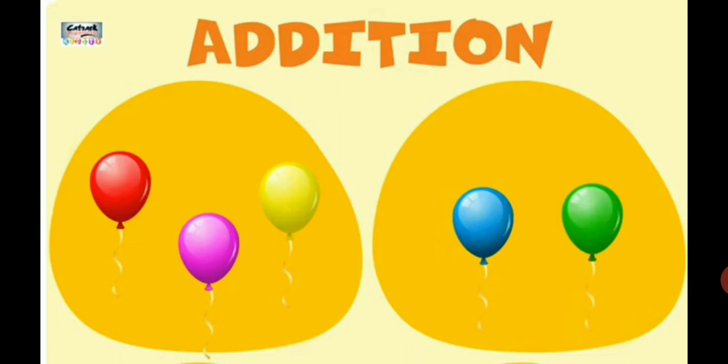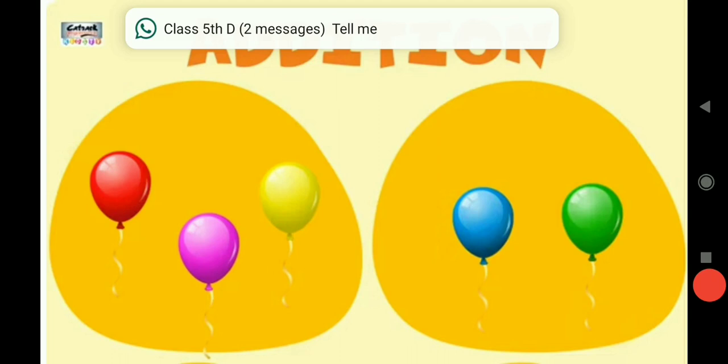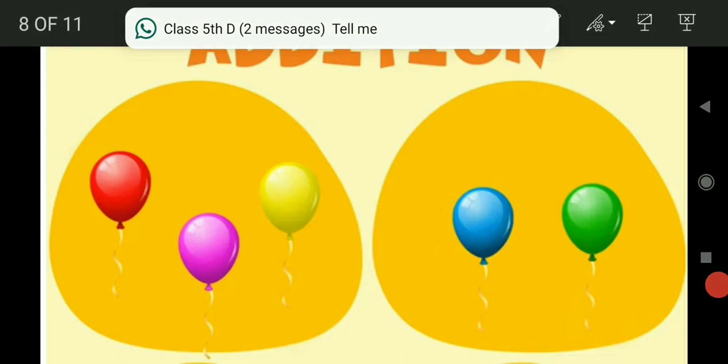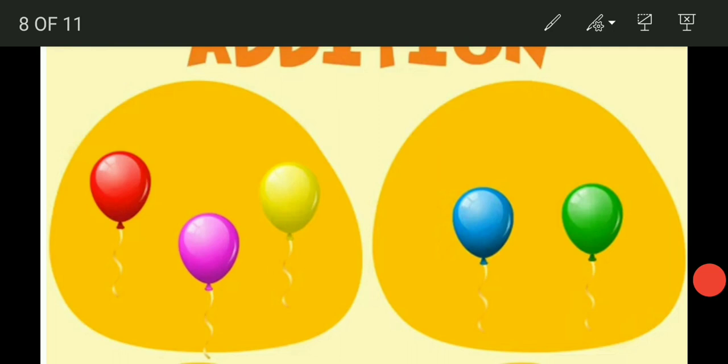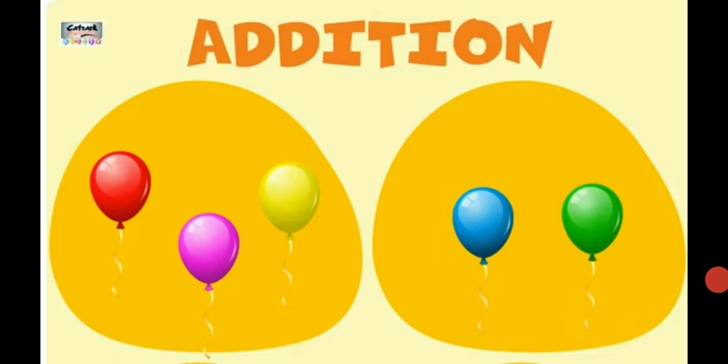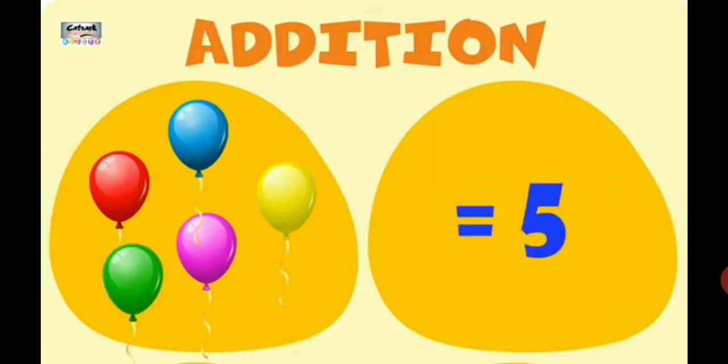Now there are 2 bubbles. You can see some balloons in one and some balloons in another bubble. So let's count them. 1, 2, 3, 4, 5. So total number of balloons on the screen is equal to 5.